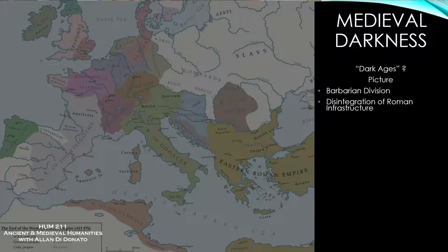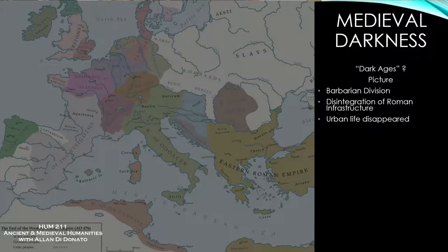Without a central government to maintain infrastructure, it became difficult to sustain an urban population, and urban life slowly disappeared. There was a population decline in most big cities — Rome at its peak had about a million people, but by the early Middle Ages you're talking maybe 30,000, a huge decline. The population shifted away from cities to rural territories and the countryside.